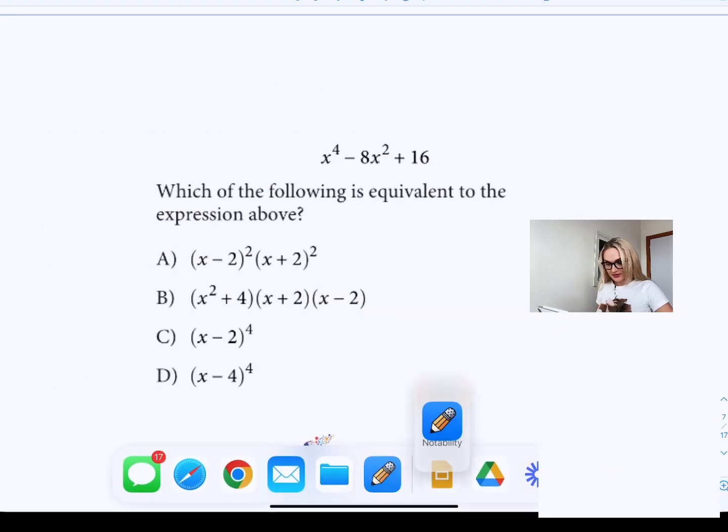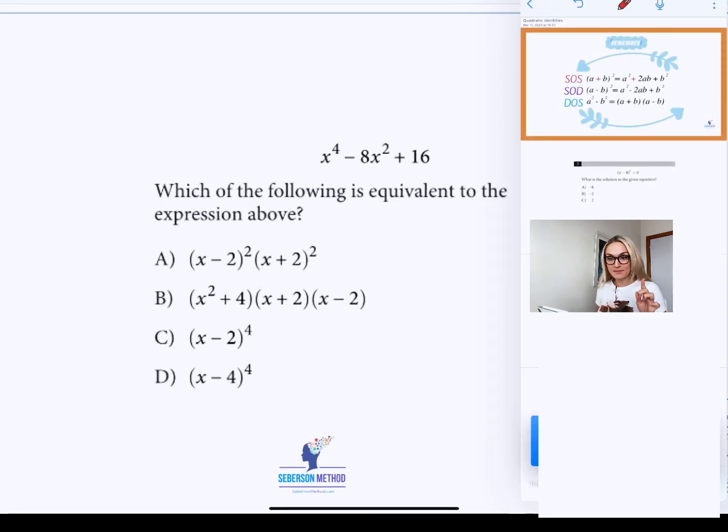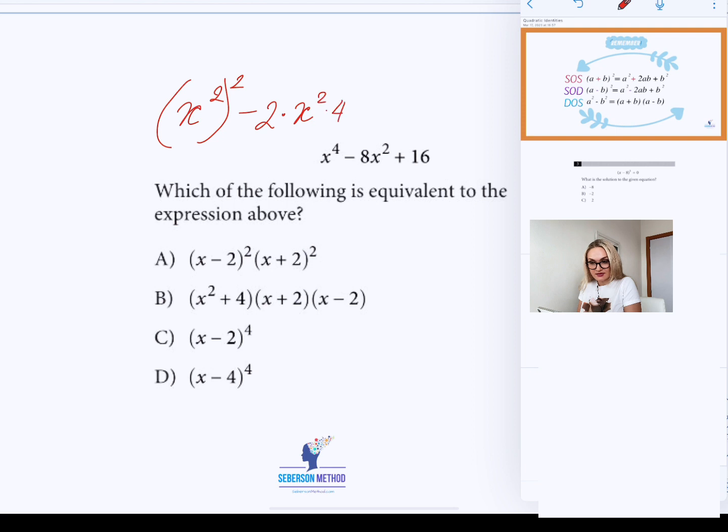I will locate my quadratic identities, and you need to have them memorized. When we look a little bit closely, you will very soon start to see that this equation is very much an S-O-D. S-O-D is square of a difference. So now I am going to rewrite this equation as x squared minus 2 times x squared times 4 plus 4 squared.